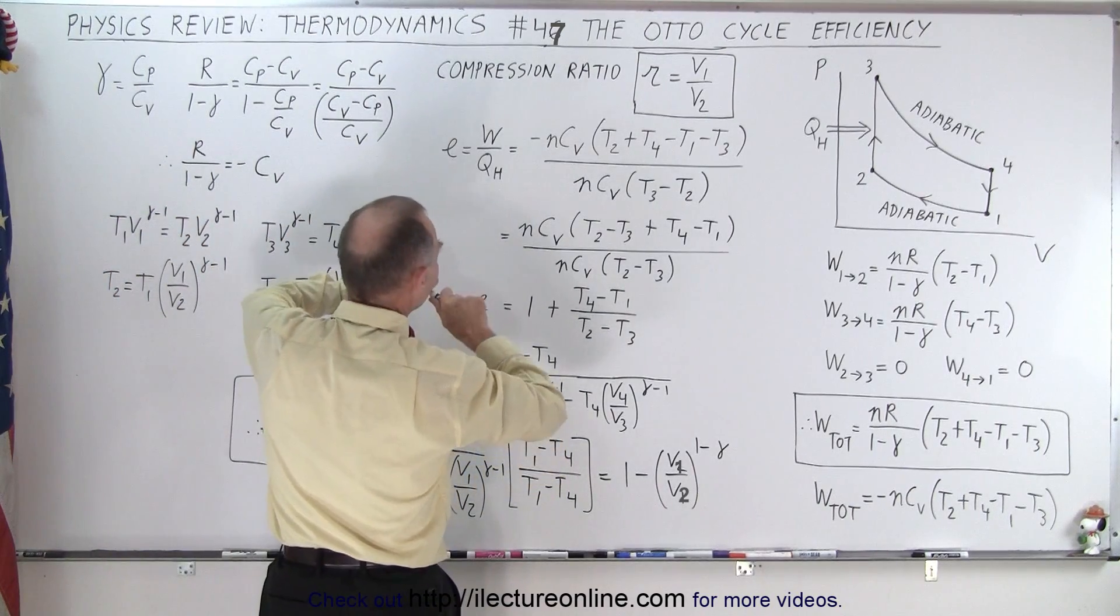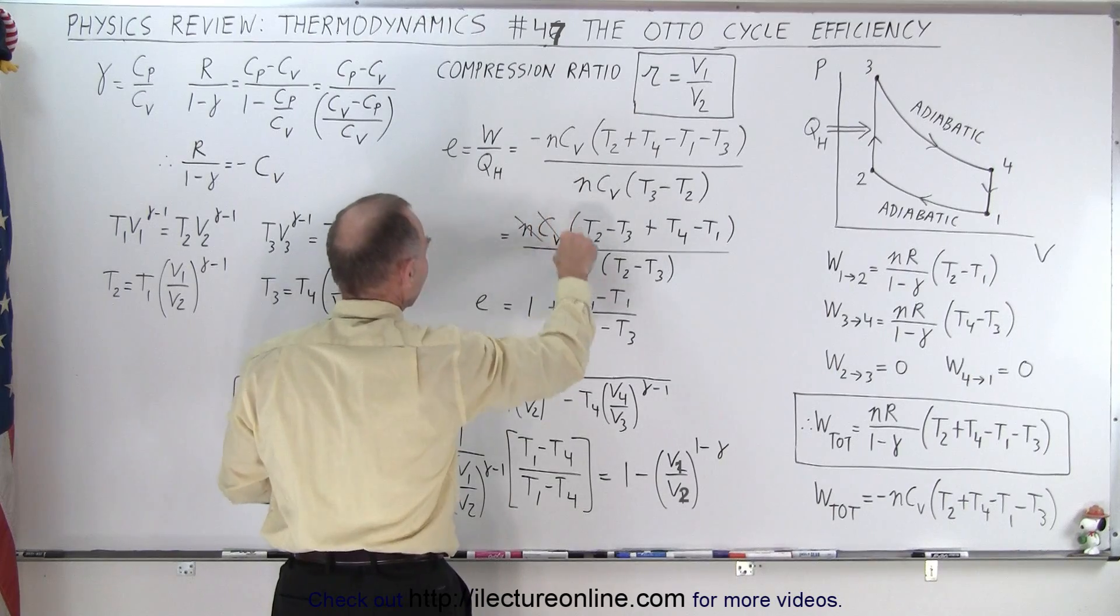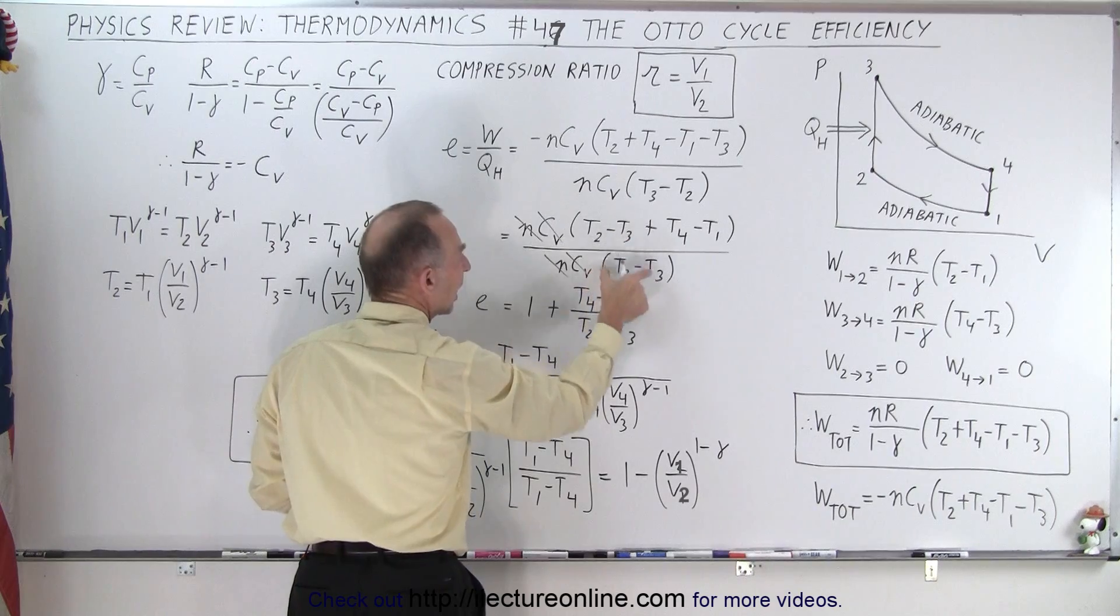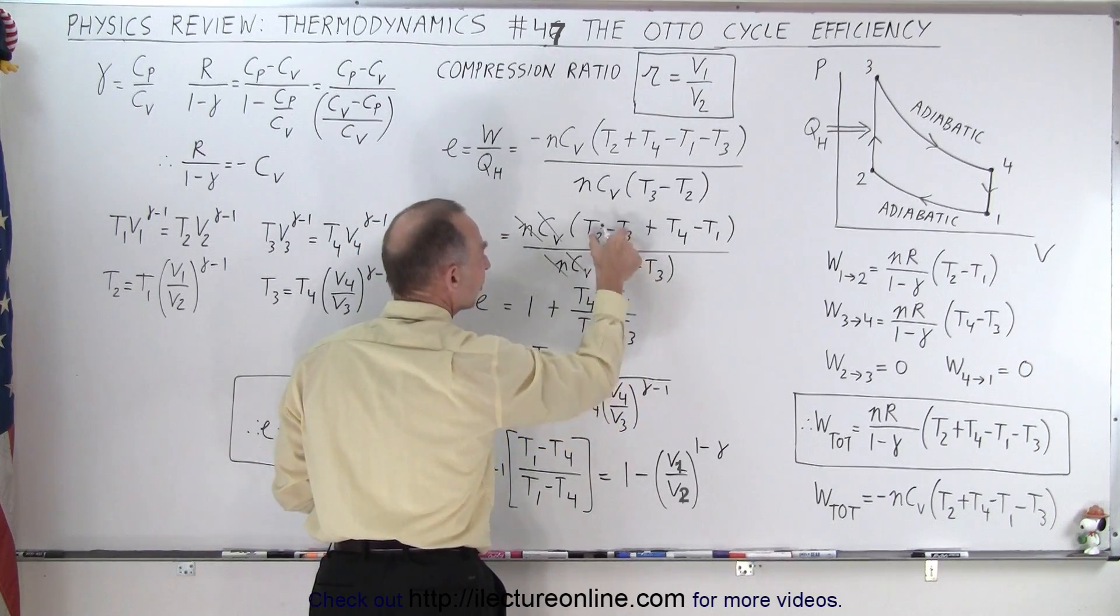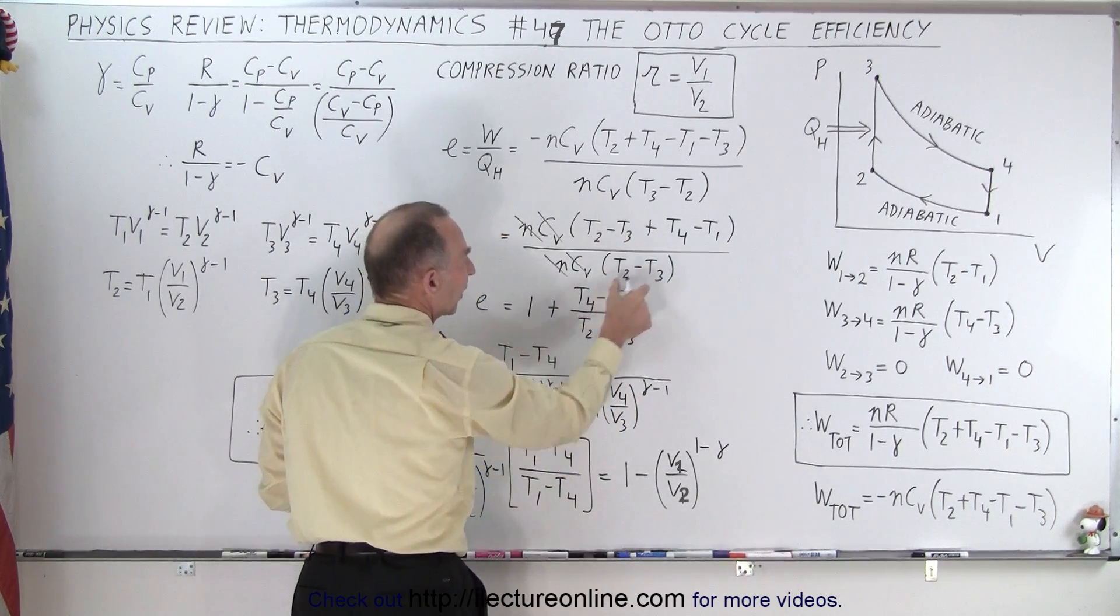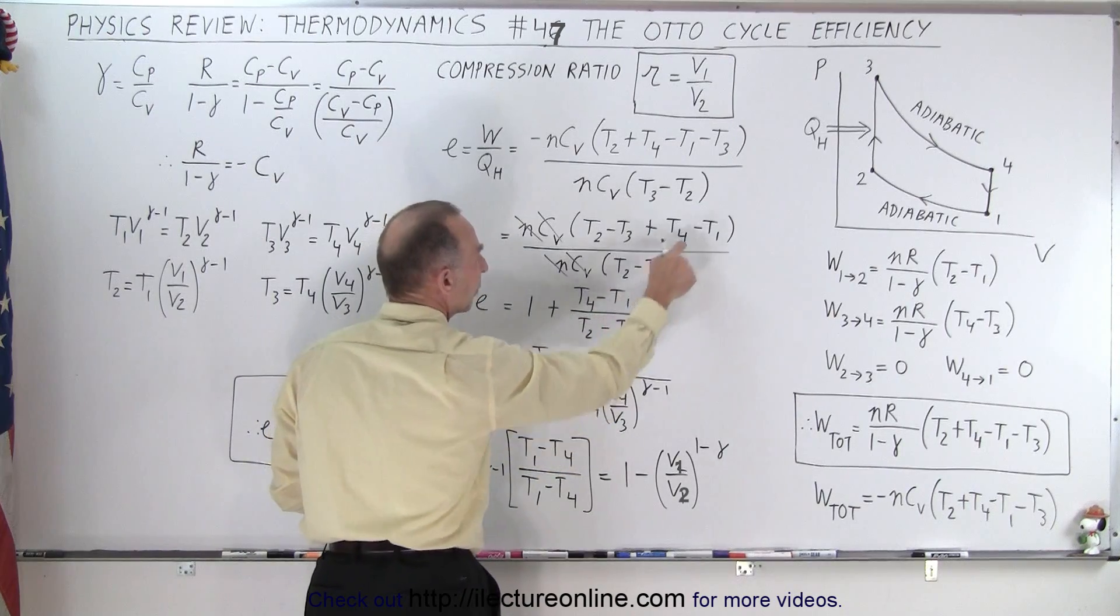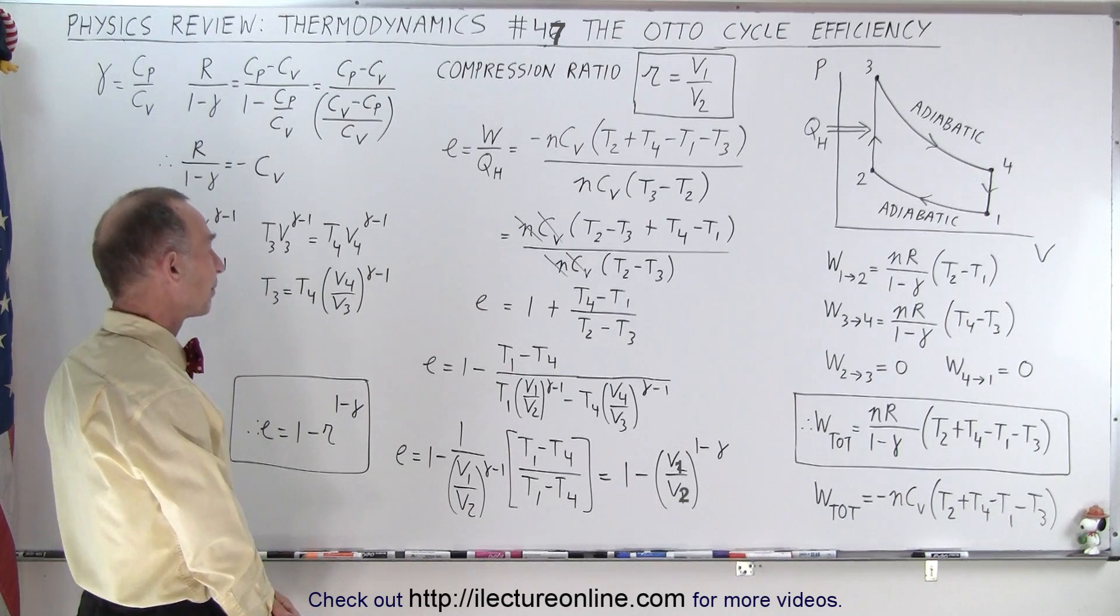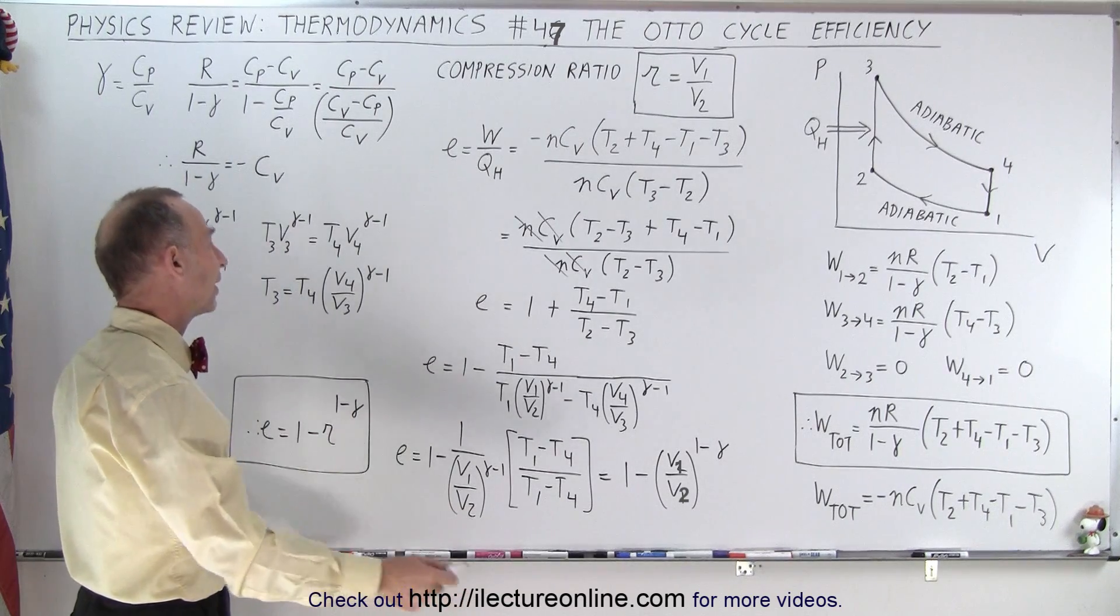Now we divide T3 minus T2 into this and into this. Divide this into this, we get 1, plus T4 minus T1 over T3 minus T2. There we go.